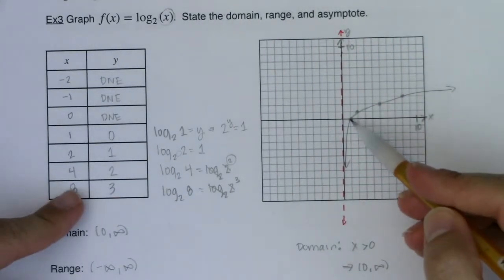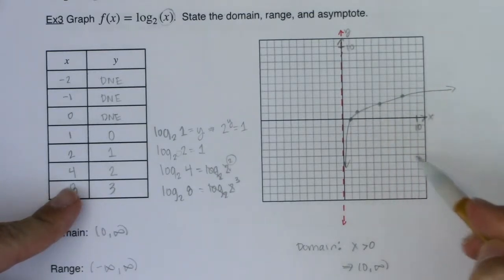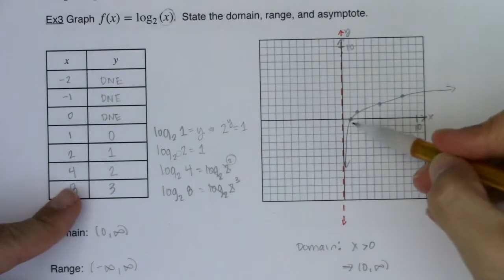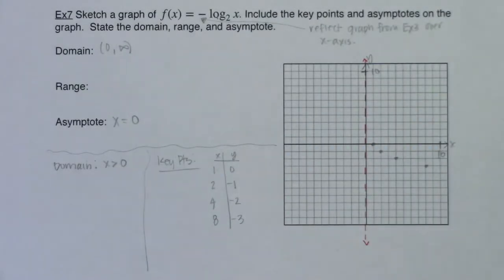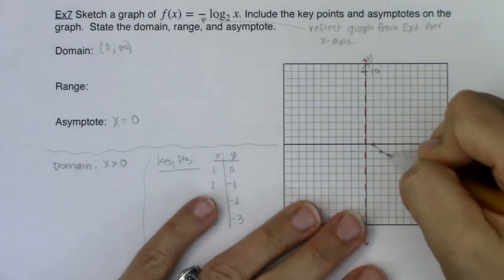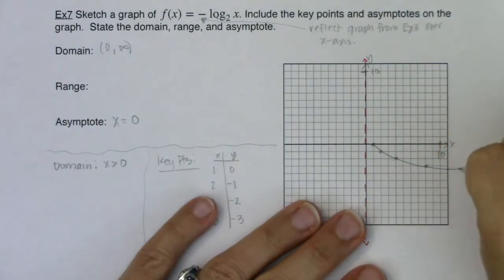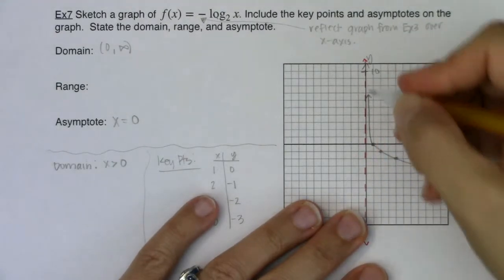So I want you to think anything that was positive, right, these are the positive y values they become negative y values. And anything that had negative y values like down here become positive y values. So this flip-flops or reflects over that x-axis. So with that being said I can see my graph popping in there.